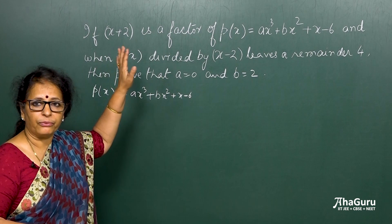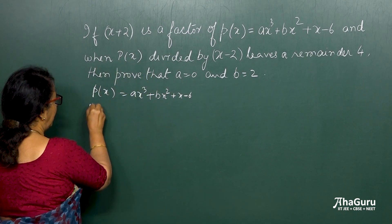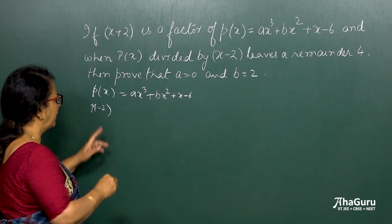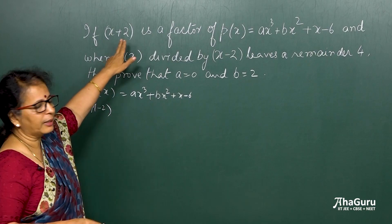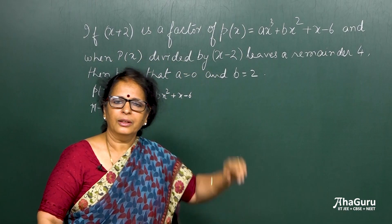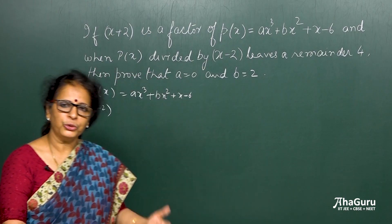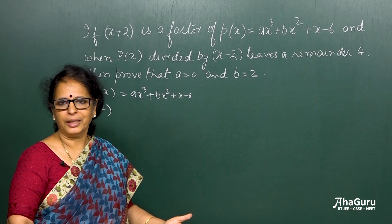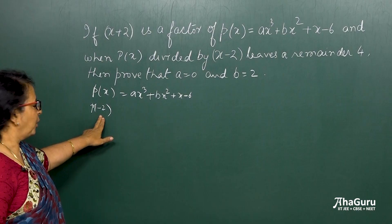If x plus 2 is a factor, that means p of minus 2. And how did I get minus 2? All I have to do is equate this to 0, x plus 2 equals 0. That gives me x equals minus 2. So wherever I have x, I put minus 2.